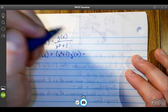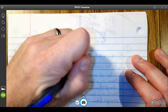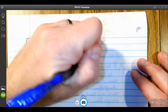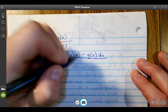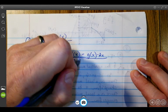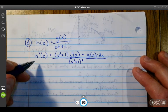Minus the numerator g(x) times the derivative of the denominator, which would be 2x. Then all divided by the denominator (x² + 1) squared. So that is H'(x).